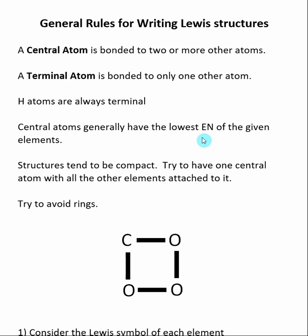Another general rule is structures tend to be compact, and that's what we mean by one central atom with all the other atoms attached to it. We tend to avoid long chains, and we also try to avoid rings. When we draw Lewis structures in general chemistry, we typically have a central atom that is bonded to the other atoms in the molecular formula.